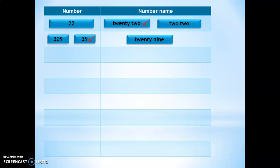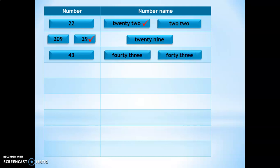These kinds of questions help the child to think before answering. Let's move on to the next question: 43. Which is the correct number name — FOURTY THREE or FORTY THREE? The correct answer is FORTY THREE. 43 is a spelling which children make mistakes with commonly, so it is good to give such questions for the child to think and answer.